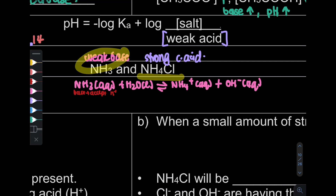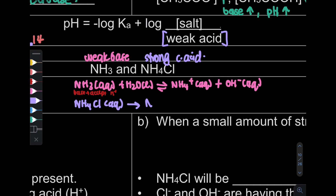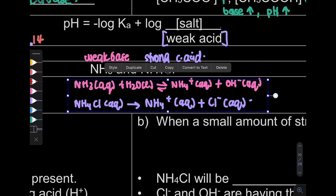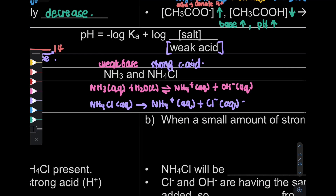Now we're going to do the strong conjugate acid dissociation. NH4Cl will fully dissociate since it is a strong conjugate acid: NH4+ plus Cl minus. Okay, so that is your equation. After this, let's look at what would happen to this basic buffer if we add or remove H+ or OH minus.